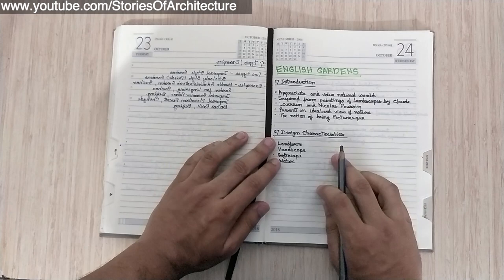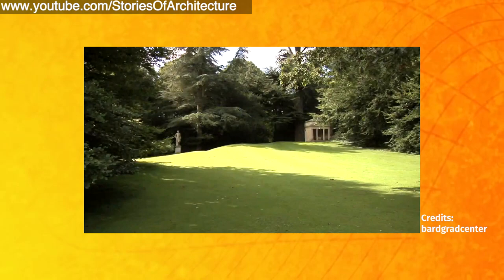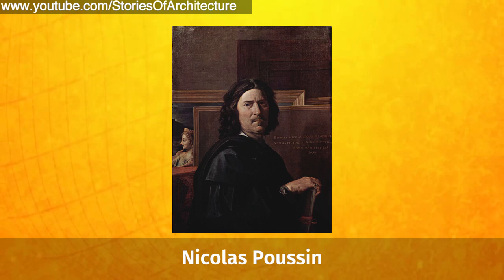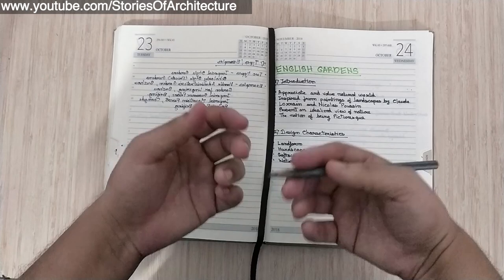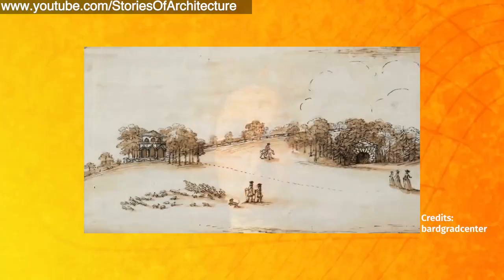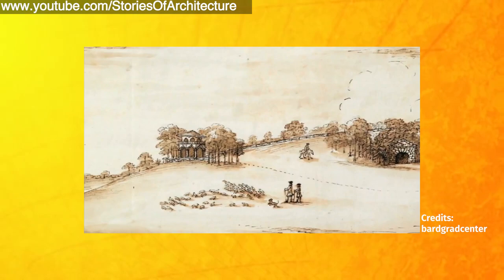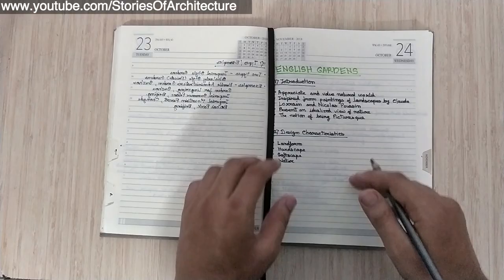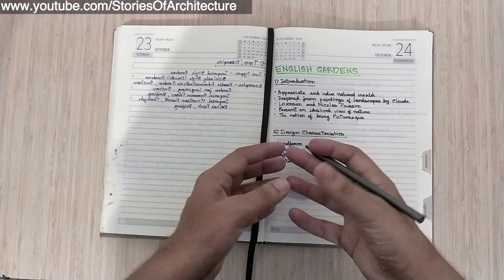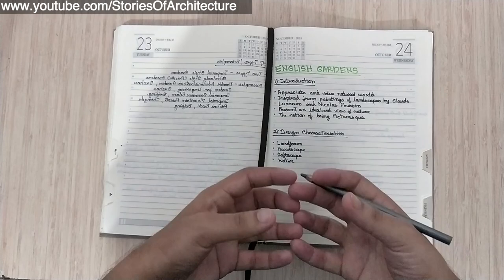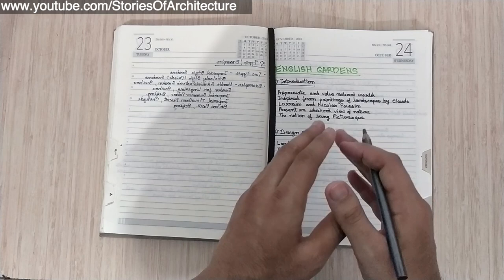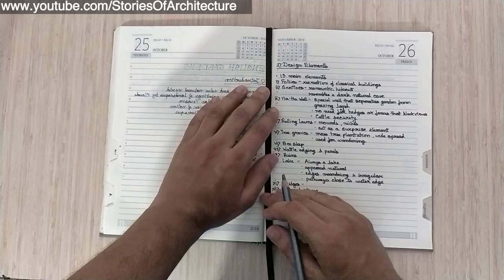The second type of garden is English gardens. English gardens appreciate and value the natural world. They are inspired from paintings of landscape by Claude Lorraine and Nicolas Poussin, who were landscape painters. A question may come up asking which type of garden is inspired from paintings — the answer is English gardens. English gardens present an idealized view of nature and the notion of being picturesque, a concept associated with William Kent, the pioneer of the picturesque.